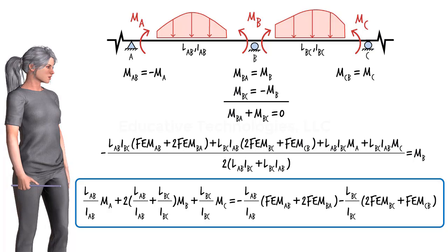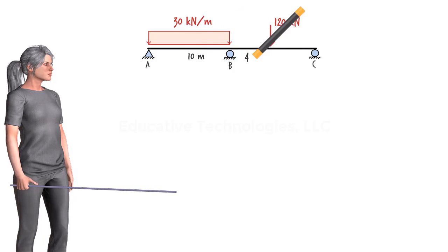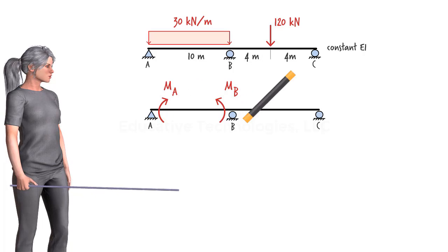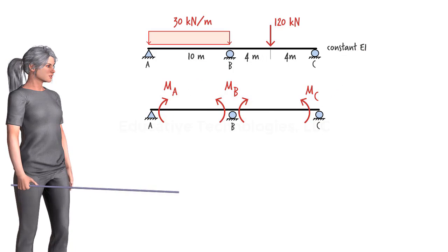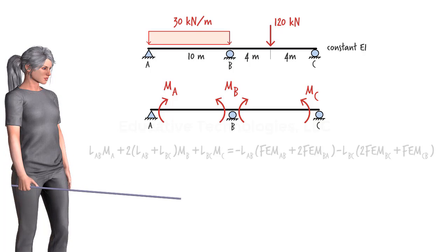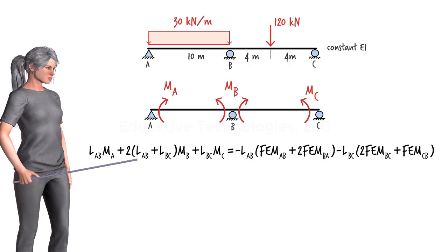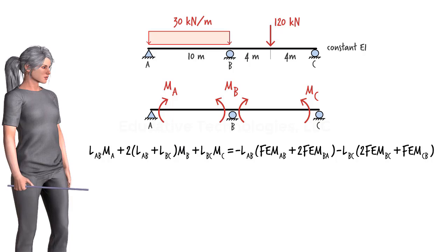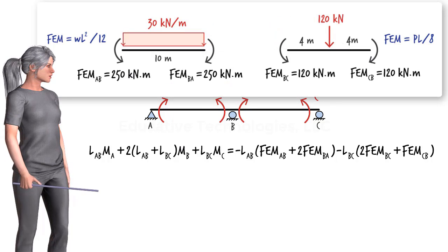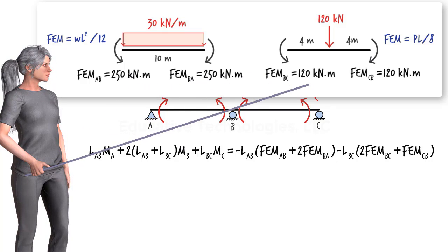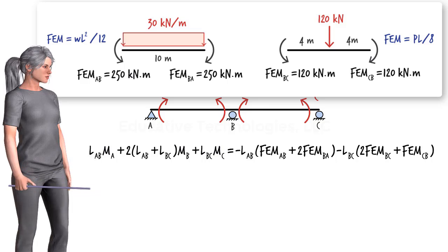Let's see how we can analyze a continuous beam using this equation. Consider this two-span beam. We are going to label the three moments MA, MB, and MC. Since the beam has a constant moment of inertia, the three-moment equation simplifies. We know lengths LAB and LBC, and we can easily determine the fixed-end moments for the two segments. For the distributed load the fixed-end moments are calculated, and for the concentrated load we have the corresponding values. The three-moment equation then becomes the expression shown.